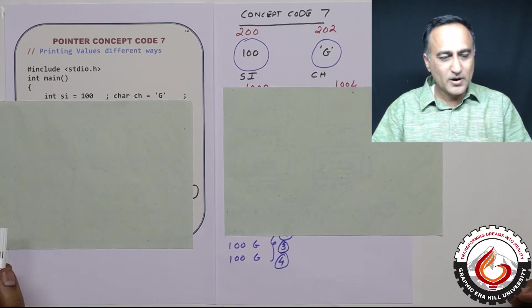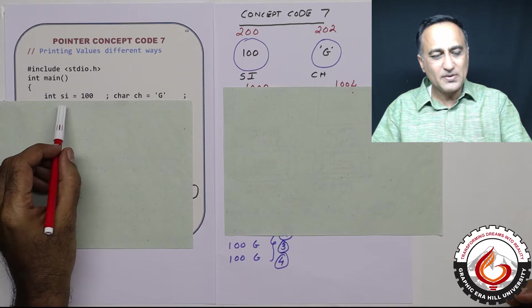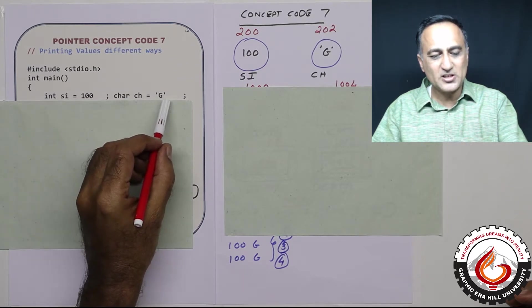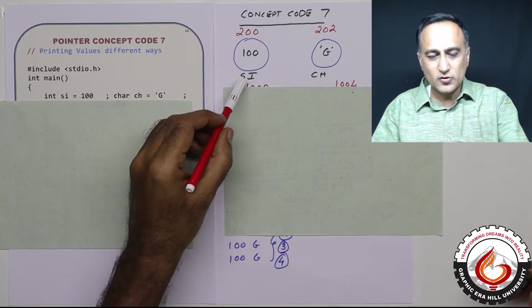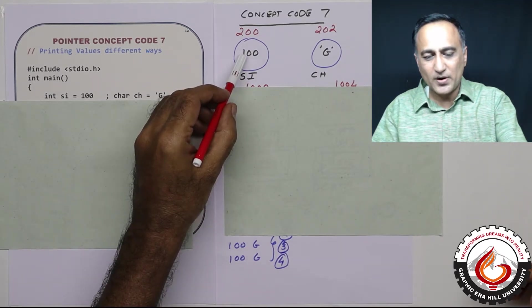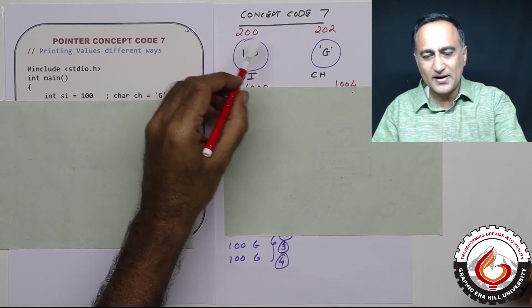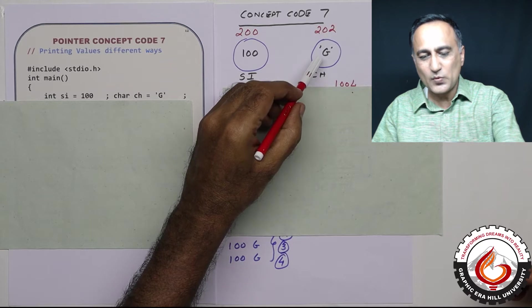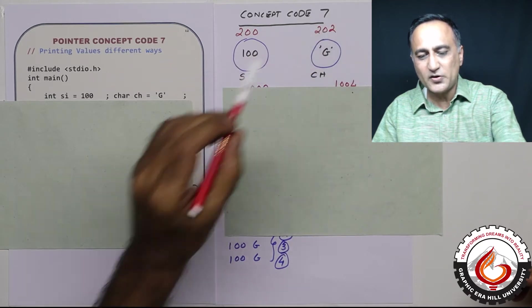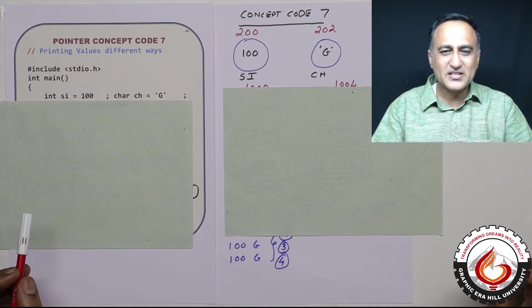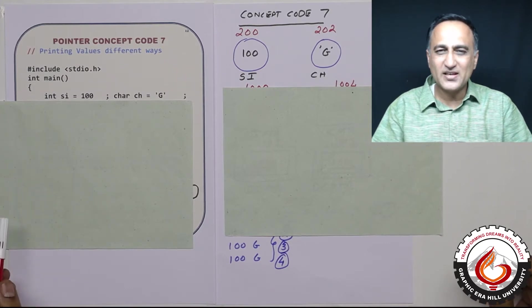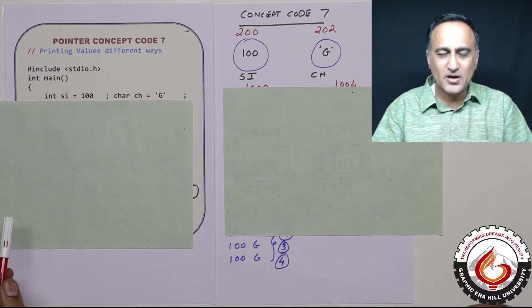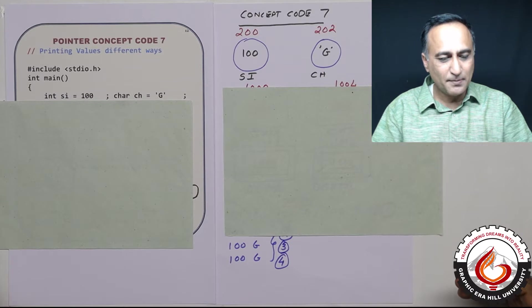The first thing I am doing here is I have declared an integer variable si with the value 100 and a character ch with the initial value g. So si with the initial value 100 is residing at address 200, and character ch with the value g is residing at address 202. I have made a simple assumption that integer is going to be two bytes — in most machines it will be four bytes, but this is just for conceptual understanding so the size really does not matter.